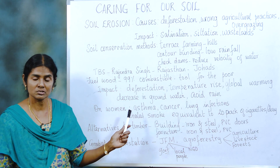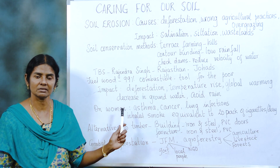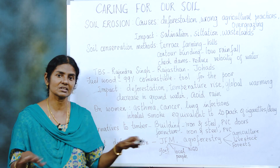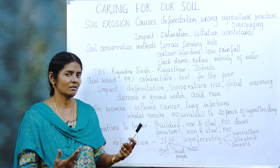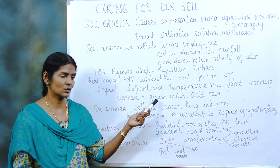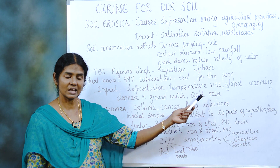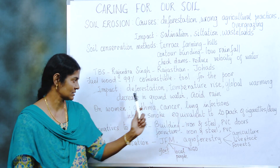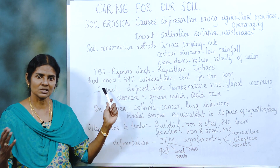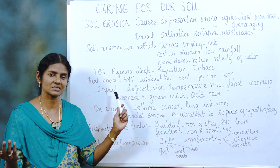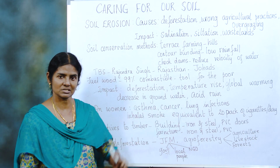When temperature increases, groundwater also decreases. As long as temperature is maintained, there is proper rainfall, but when it increases, groundwater goes down and it also causes acid rain. The smoke from burning fuel wood releases oxides of sulfur and nitrogen, which cause acid rain.